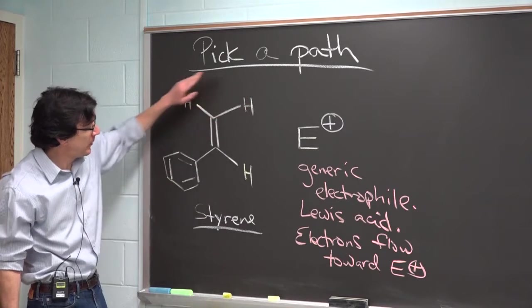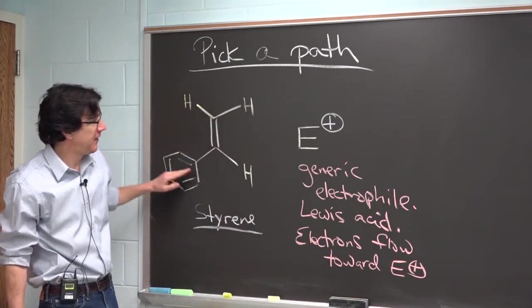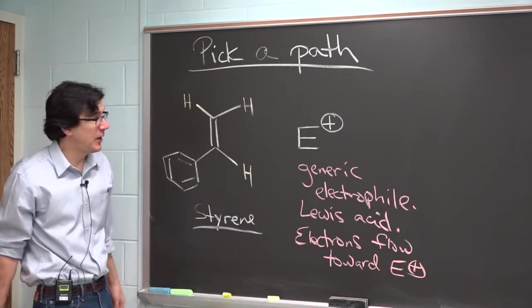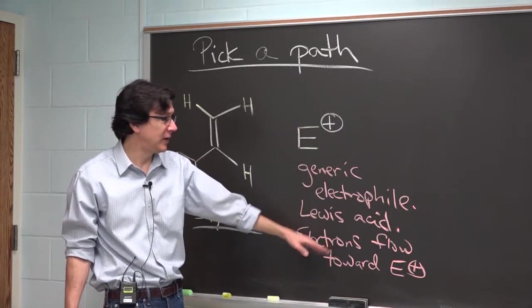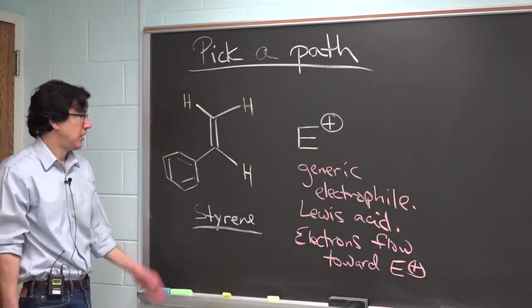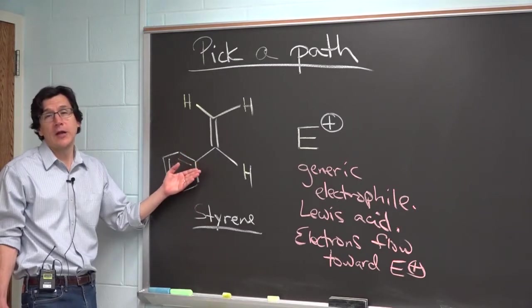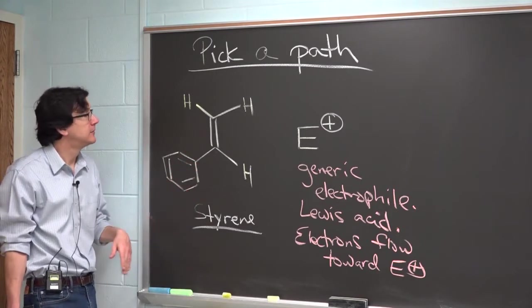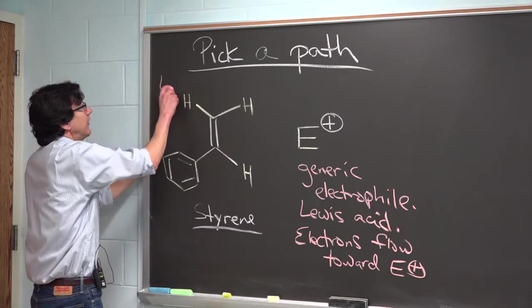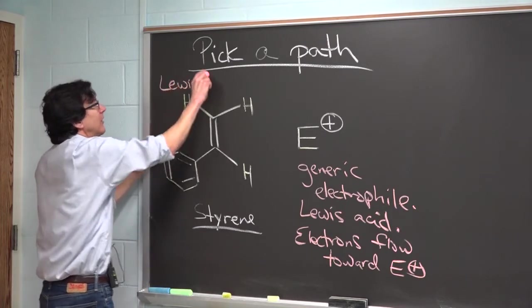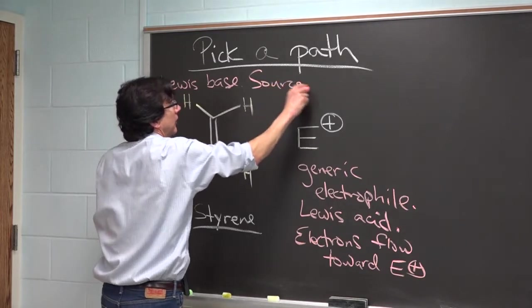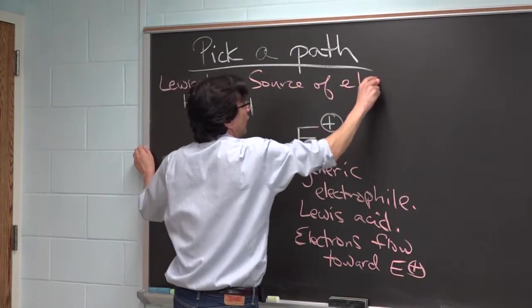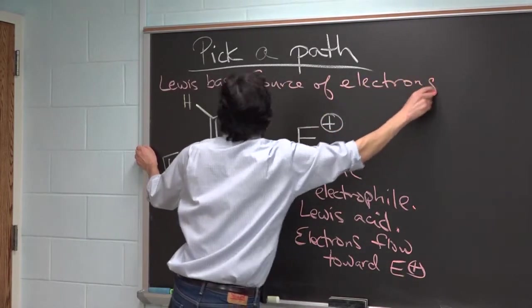What must be the role of the other compound in this reaction if this is the electrophile, which is a Lewis acid, and electrons flow toward it? In this case, this molecule is going to act as what? This is going to be the Lewis base. It's going to be the source of electrons.